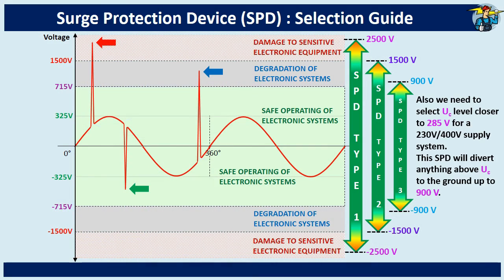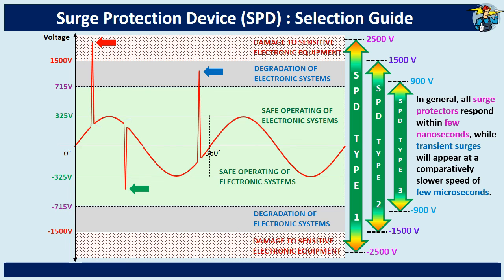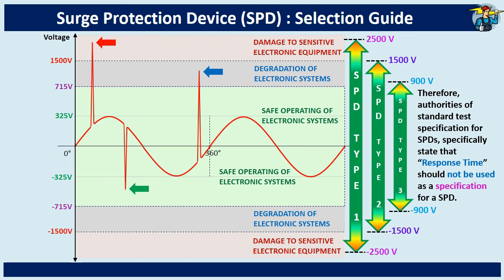Further, we need to select a UC level closer to 285 volts for a 230 volt or 400 volt supply system. This SPD will divert anything above UC value to the ground, up to 900 volts. That means if this SPD receives a 900 volt transient surge, it will allow 285 volts to the load side, and will divert the balance 615 volts to the ground within a few nanoseconds. In general, all surge protectors respond within a few nanoseconds, while transient surges appear at a comparatively slower speed of a few microseconds. Therefore, standard test specifications for SPDs specifically state that response time should not be used as a specification for an SPD.